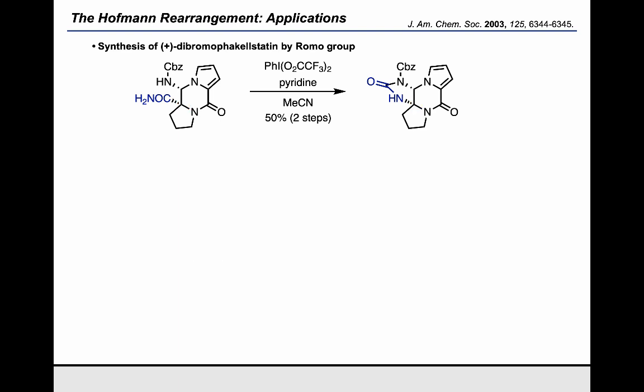After accessing that urea, the Romo group was then able to carry it on to form dibromofacalstatin in just a couple of steps using a late-stage dibromination protocol. Using the Hoffman rearrangement, they were able to set up the really challenging nitrogen-containing stereocenters in this natural product.